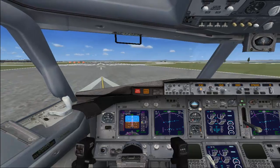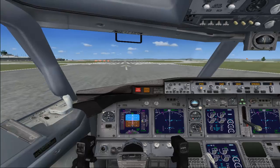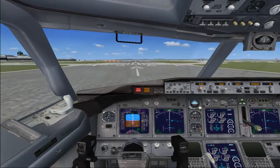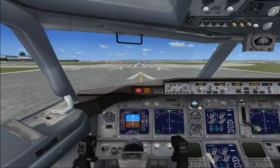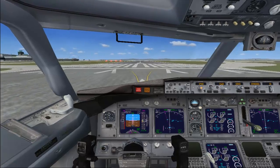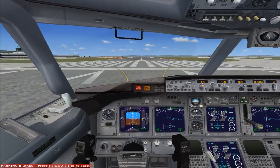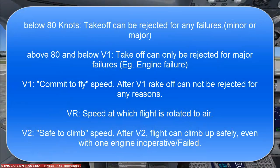I would like to tell you about the decision speeds. We have four decision speeds in your takeoff roll. After aligning with the runway, we will set our takeoff thrust. From 0 knots to 80 knots, you can reject your takeoff for any reason, whether major or minor. After crossing 80 knots — that is from 80 knots to V1 — you can only reject your takeoff for major reasons like engine failure, engine fire, or any other takeoff configuration warning alarms.